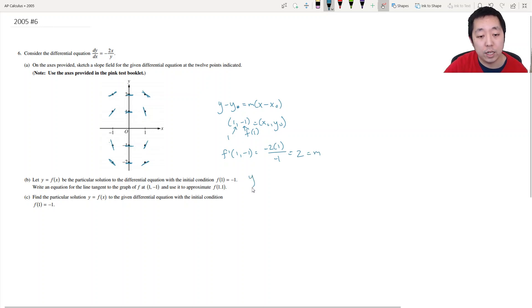So my tangent line equation is y minus negative 1 is equal to 2 times x minus 1. Alright that's y plus 1 or y is equal to 2x minus 1 minus 1 here. Okay so that's my tangent line equation that I'm going to use. And let's just double check. When I plug in 1 it becomes negative 1. Yeah that's good.